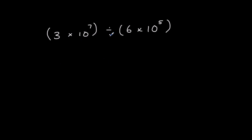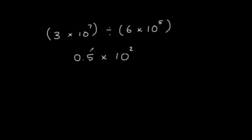Again here we've got 3 divided by 6 which is a half, 0.5. And we've got 10 to the power of 7 divided by 10 to the power of 5, which is 10 to the power of 2. But this is not in standard form because we need a number between 1 and 10 again. So we're going to have to multiply this by 10, which means we take one off the power here. So that becomes 5 times 10 to the power of 1, and that's the final answer.